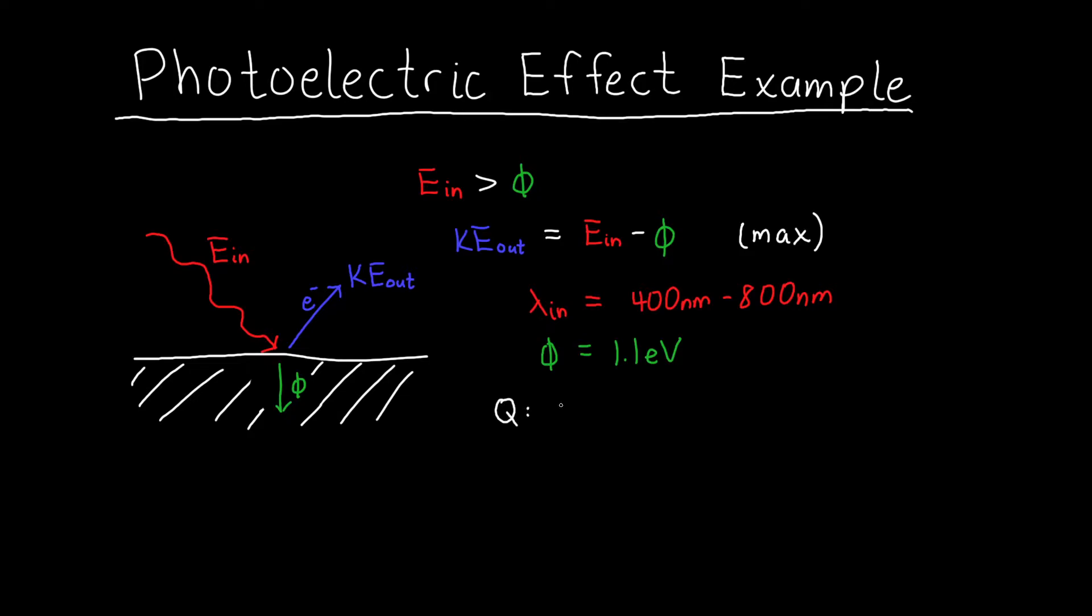what is the maximum output kinetic energy of the electrons? Let's give it a little subscript: KE_max equals what? Well, to figure out the maximum kinetic energy, I want to know the maximum input energy because the higher our input energy, the higher our output kinetic energy.